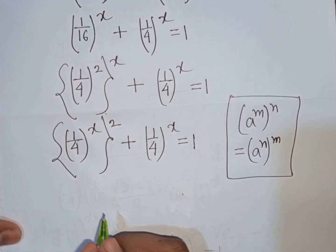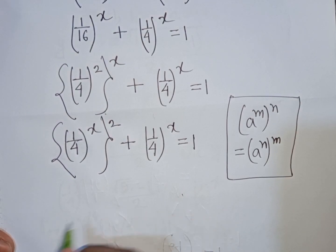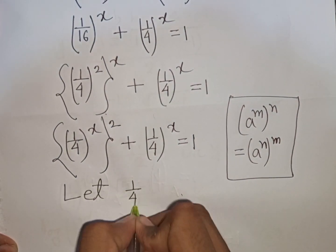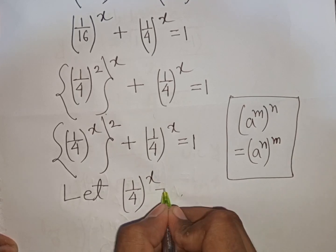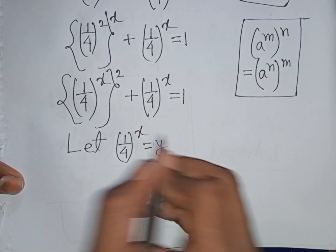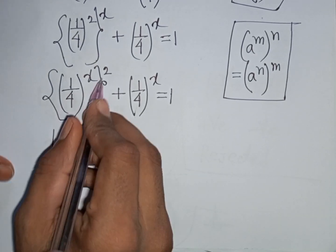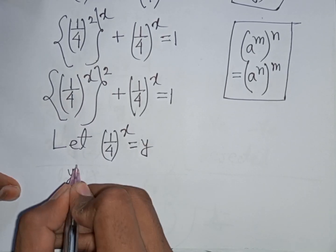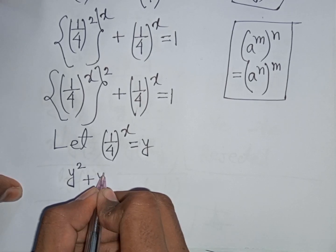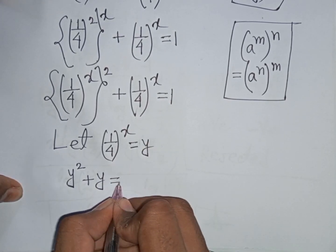We notice that (1/4)^x appears in both terms. Applying the rule (a^m)^n = (a^n)^m, and substituting y = (1/4)^x, our equation becomes y^2 + y = 1.